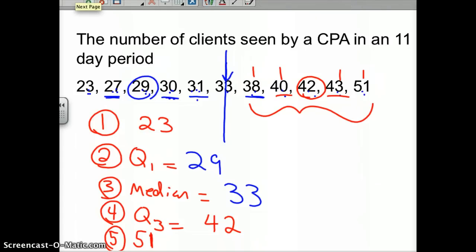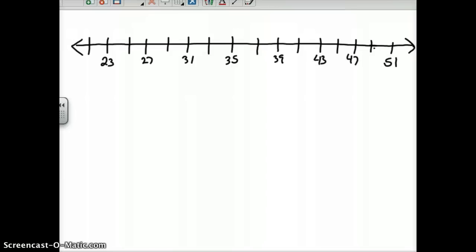Now, we can take this and make a visual representation of it. That's really what statistics is all about—how to get these numbers, these abstract things, into something visual that we can analyze. You make a number line. It's very important that your numbers, your lines are spaced evenly.